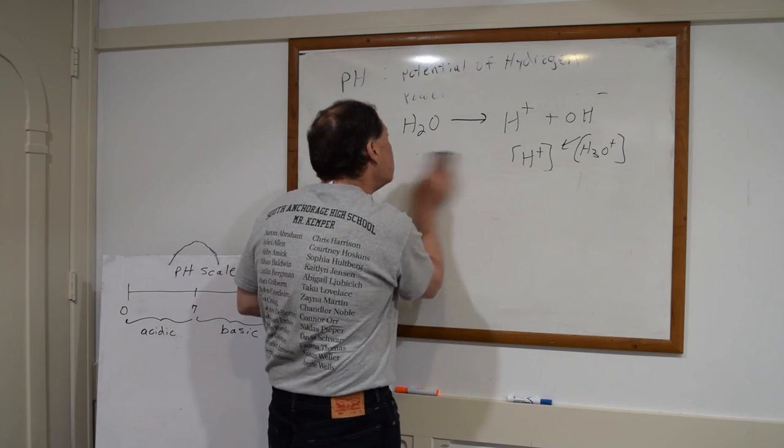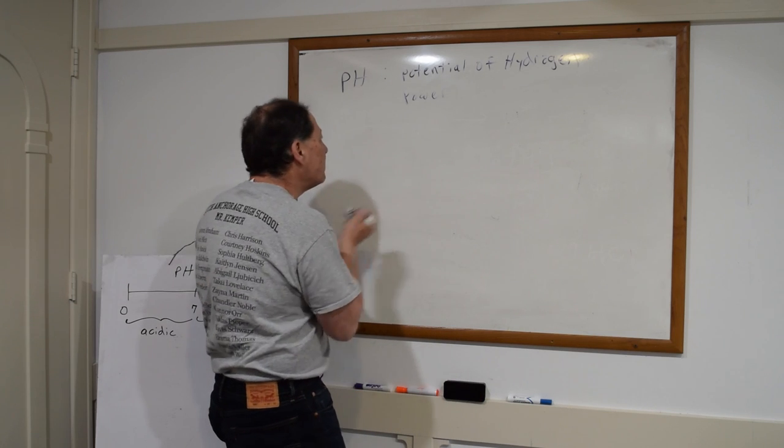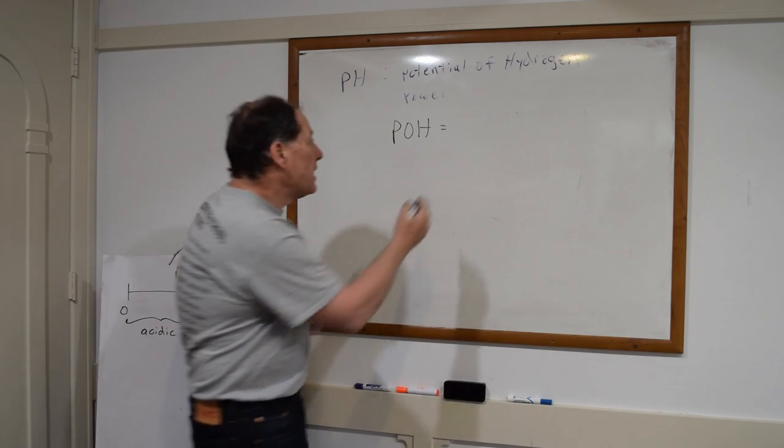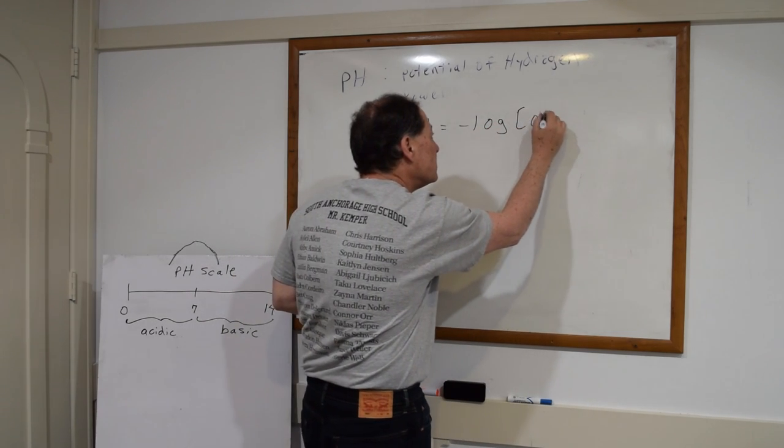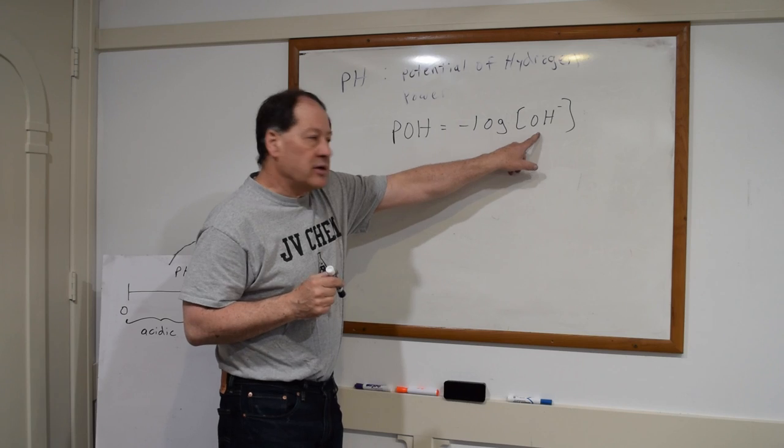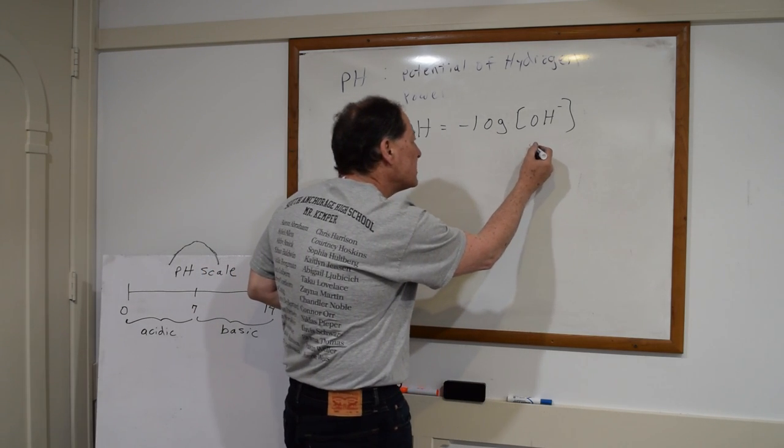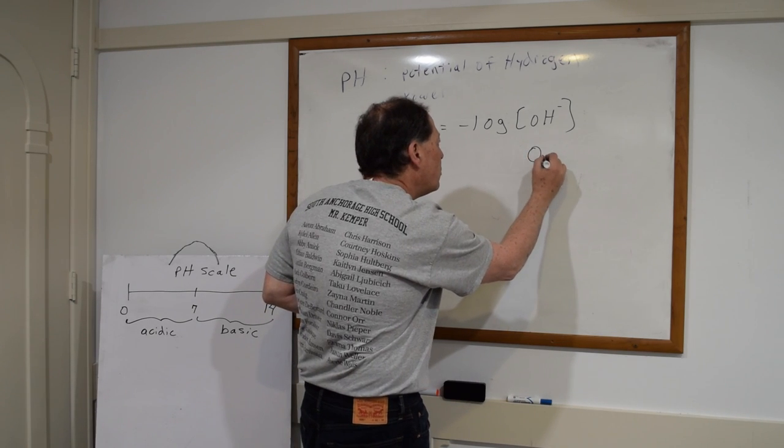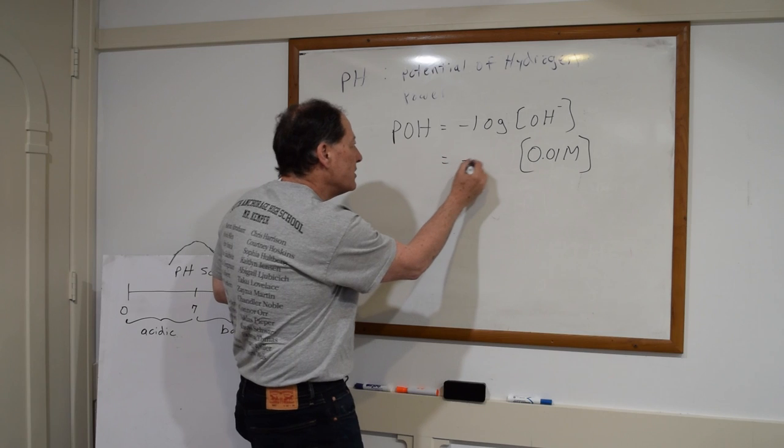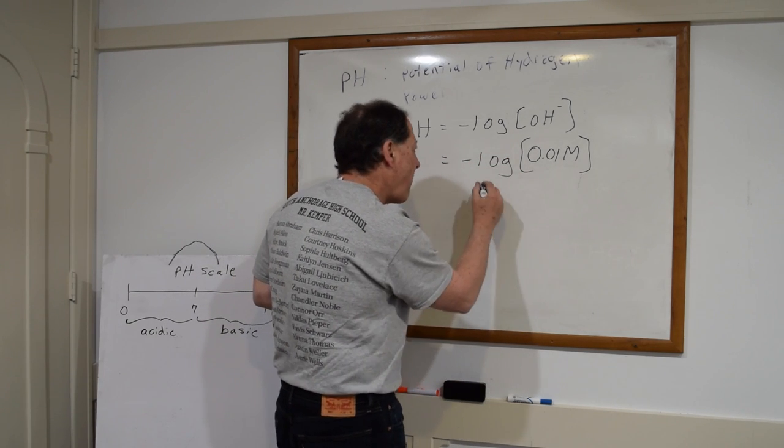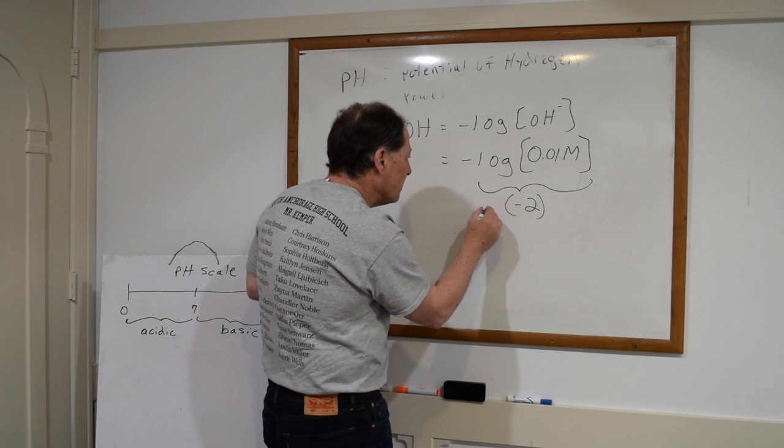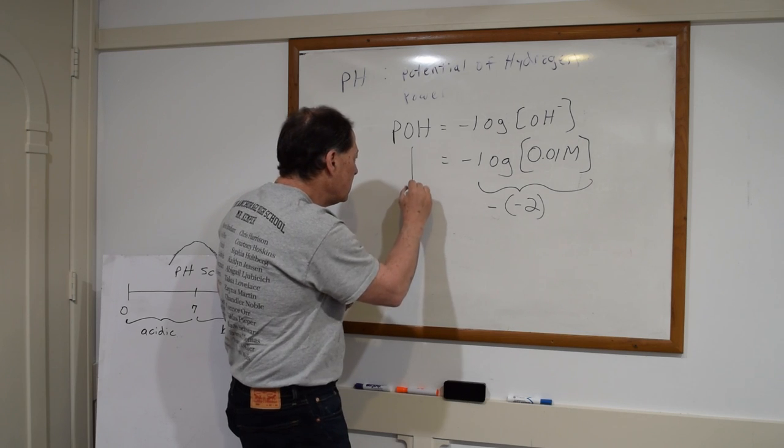All right, last couple of details here. I also have another function called the pOH. It's not as commonly used, but I could find the pOH, which means the power of hydroxide. And it's going to be a very similar equation. So if the pOH is needed to be calculated, I need to know the hydroxide ion concentration in moles per liter. So let's say that I know that the hydroxide ion concentration is, let's say, 0.01 molar. How do I calculate the pOH? Well, it's going to be a very similar calculation. I just take the log of 0.01. So that part is going to be negative 2.